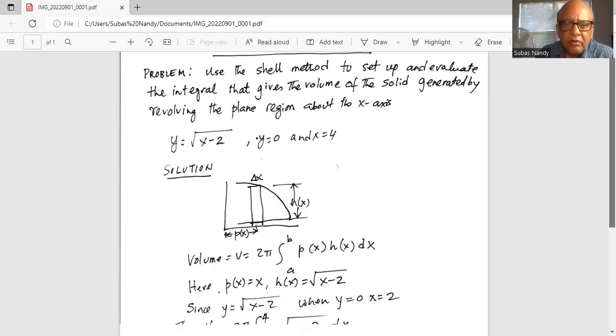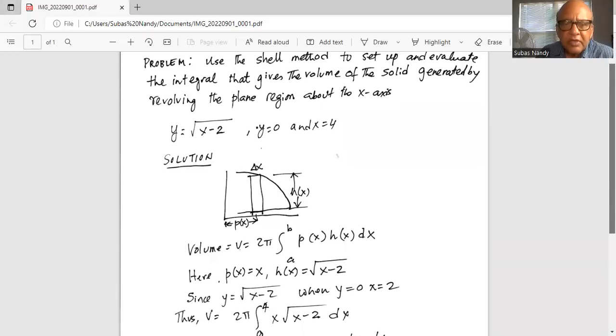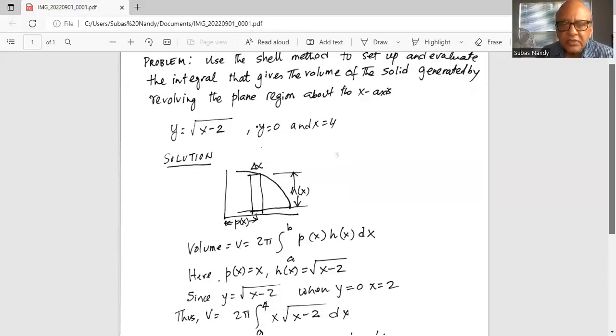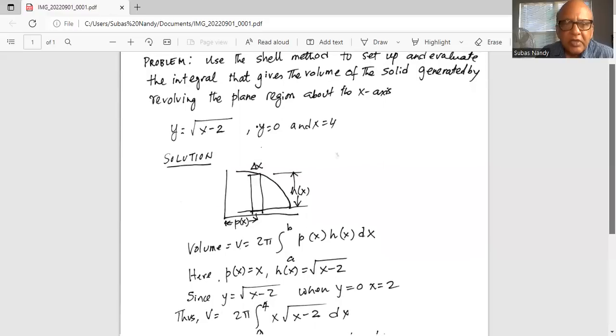Okay so volume by shell method is given as v equal to 2 pi, integration between a and b, the limits p of x multiplied by h of x and dx. Now p of x is equal to x here, and h of x is equal to square root of x minus 2.